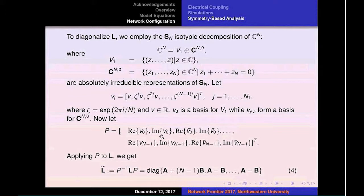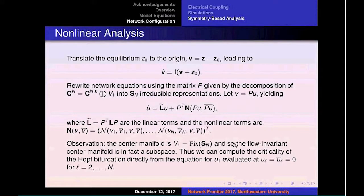We put together a transformation matrix P. We know that the transformation matrix P will lead to a diagonal version of the linearized matrix where the A plus N minus 1 times B block corresponds to the synchronous state, and the A minus B corresponds to all the symmetry breaking bifurcations that lead to other patterns of oscillations.